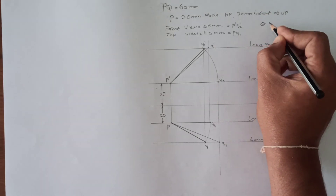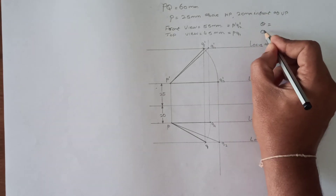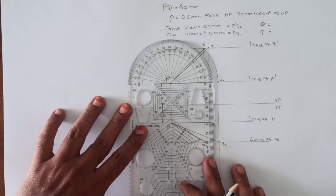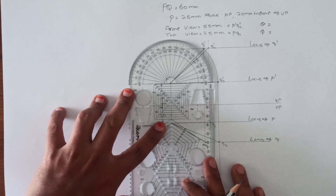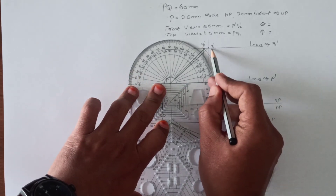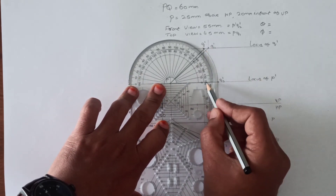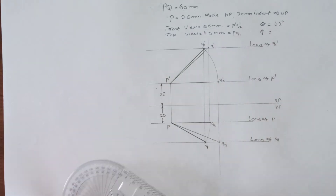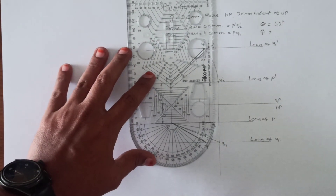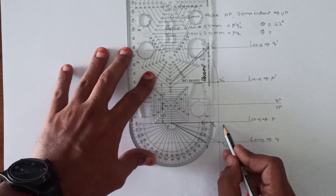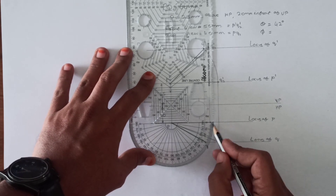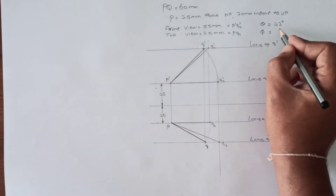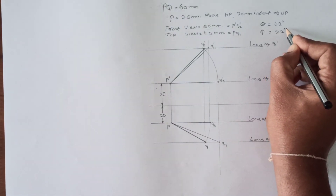In the problem, we have also been asked to find the true inclination. True inclination theta is the horizontal plane inclination — the angle between P'Q1' and P'Q2'. Similarly, phi represents the vertical plane inclination, which is the angle between P'Q1' and P'Q2'. The respective angles are measured and noted.